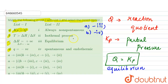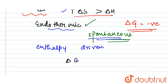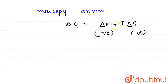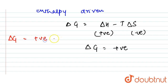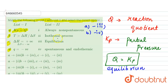For part (c), ΔH is positive and ΔS is negative. Using ΔG = ΔH − TΔS: since ΔH is positive and −TΔS is also positive (because ΔS is negative), ΔG becomes positive overall. A positive ΔG means the process is non-spontaneous. So for part (c), the answer is option i — Always non-spontaneous.